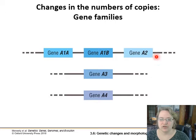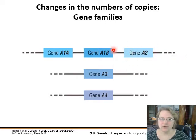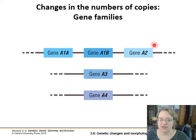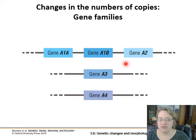Those copies slowly change over time and morph into different alleles, giving you that robustness — multiple ways of doing the same thing. So if something happens to gene A2, you have A3 and A4 with similar functions that can possibly cover for the loss of A2.